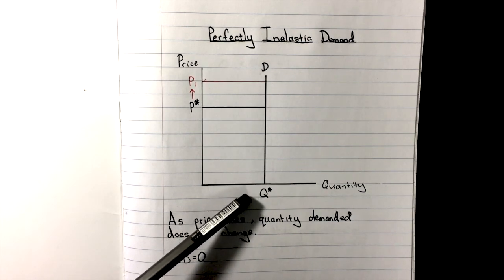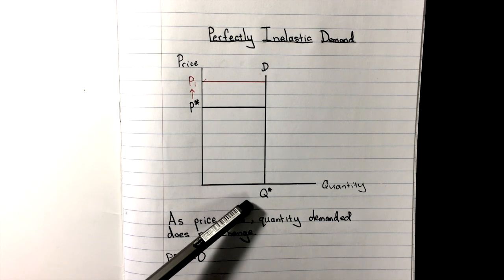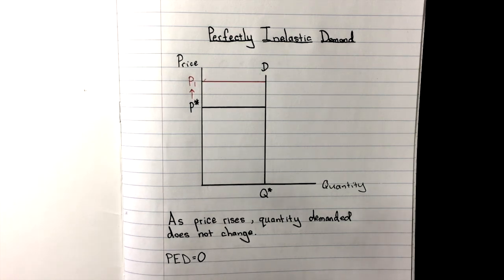So if we're looking at the formula, the percent change in quantity demanded will always be zero, and no matter the change in price, when we divide zero by any number, we're always going to get zero, so PED will always equal zero.